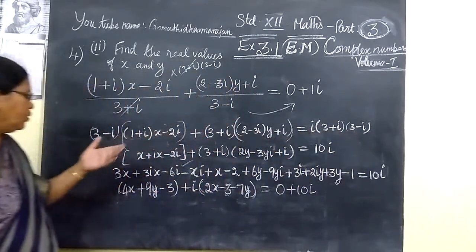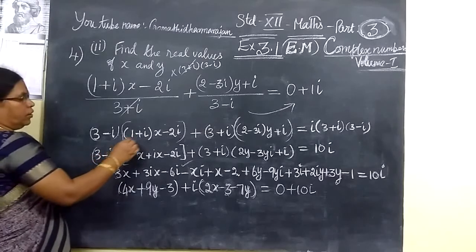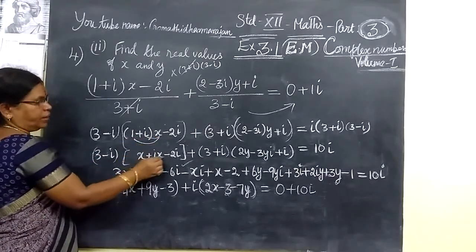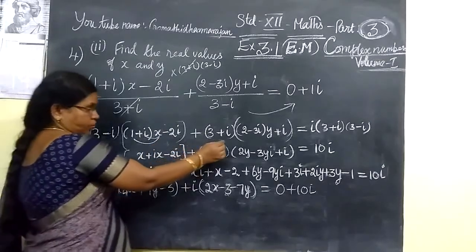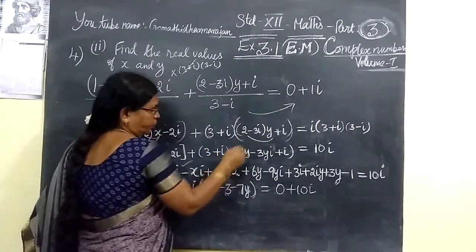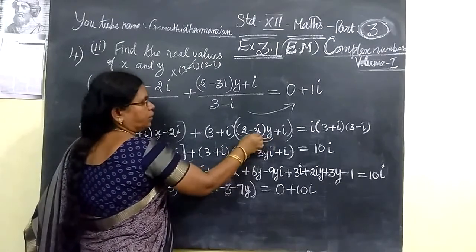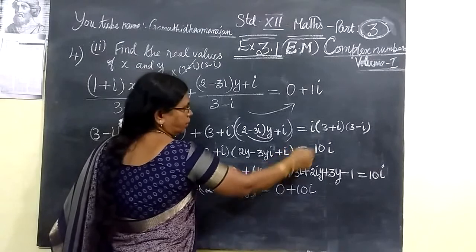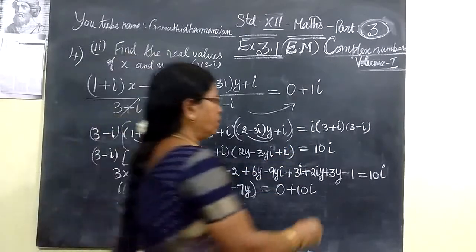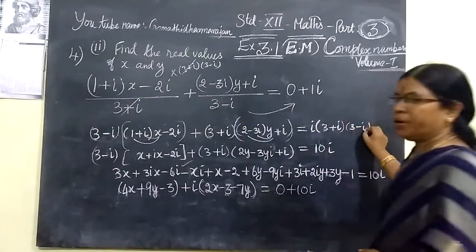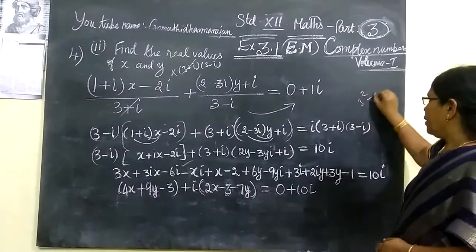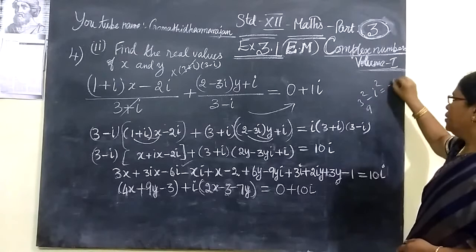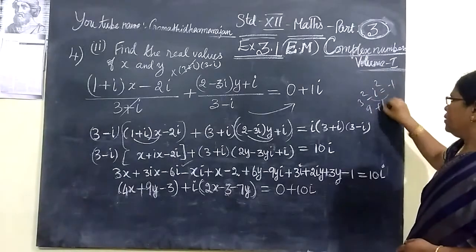Now you are taking x inside. So i into x, then minus 2i. Then you take y inside, so 2i, then minus 3yi. This is equal to 10i. 10i because (3+i)(3-i) is a² minus b² form, which is 9 minus i², and since i² equals minus 1, that gives 9 minus (minus 1), which is 10.